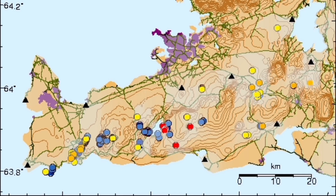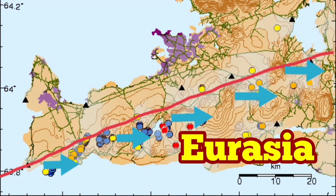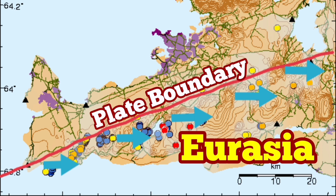The earthquakes, as I mentioned, are like a shaking of a ketchup bottle — it makes it possible for the magma to flow. So when we plot these earthquakes, we see that the pull is toward Eurasia, from Eurasia. That is a plate boundary.